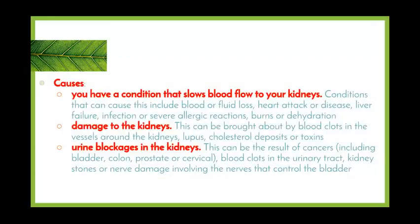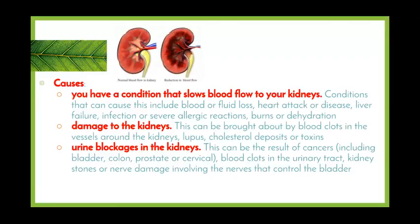Some different causes of kidney failure. One of these is a condition that slows the blood flow to your kidneys. Conditions that can cause this include blood or fluid loss, heart attack or disease, liver failure, an infection or a severe allergic reaction, and burns or dehydration. Basically a lot of these involve a decrease in blood volume, so if we don't have a decent supply of blood flow traveling through our kidneys, damage can be caused. As we can see in the picture, a healthy kidney versus a darkened kidney that's had a reduction in the amount of blood entering.